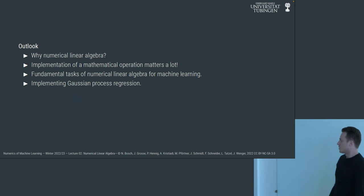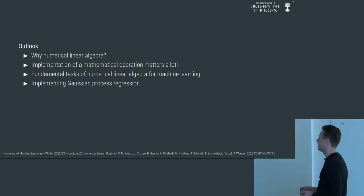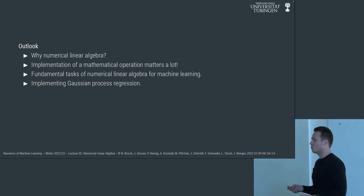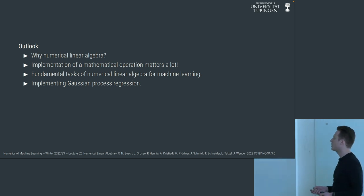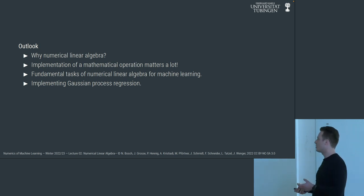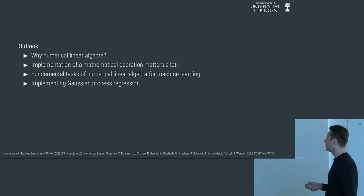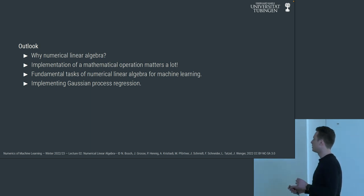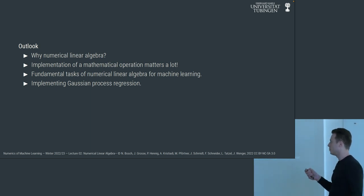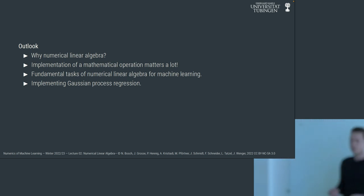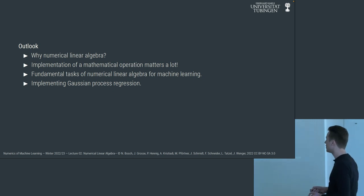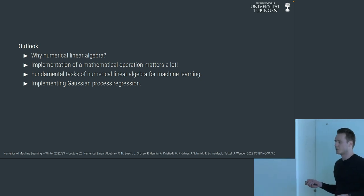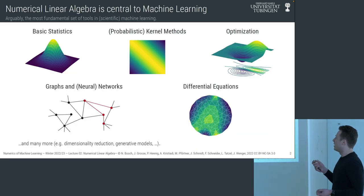There will be mostly two parts to today's lecture. First, we'll take a step back, look at the bigger picture, and answer why we should care about numerical linear algebra in the first place. Then we'll see some fundamental tasks in numerical linear algebra important for machine learning, and become more practical — looking at how implementation of mathematical operations matters and seeing how to implement Gaussian process regression properly.